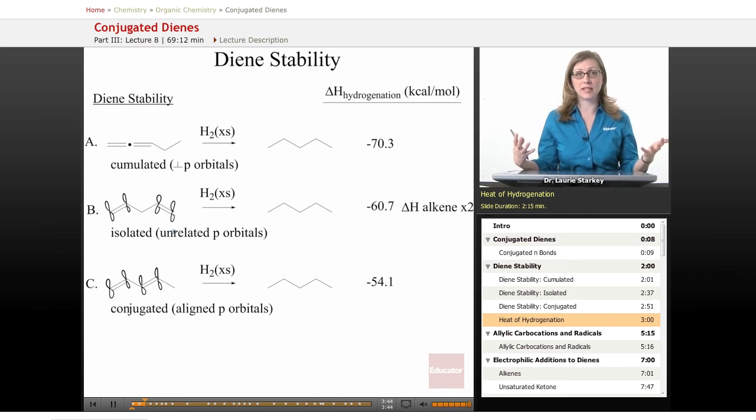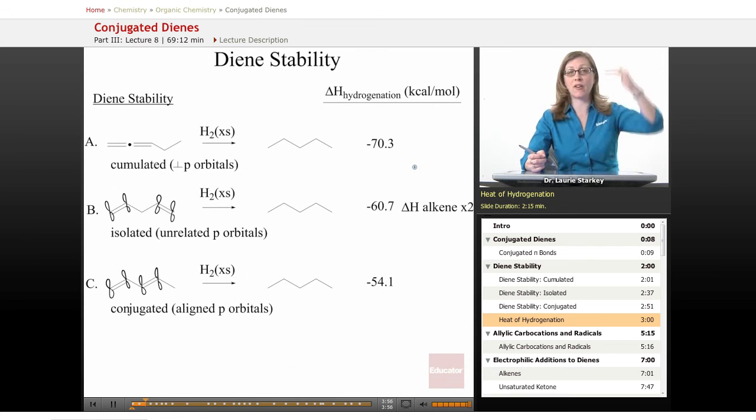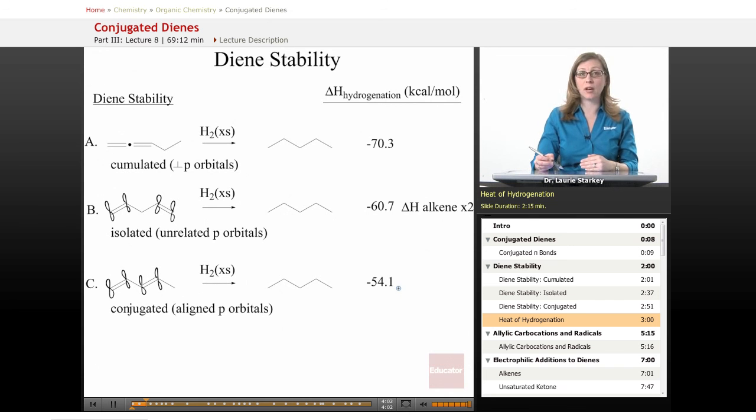However, when you force those two pi bonds to be cumulated to one another, we actually get out more energy from the reduction of this diene, meaning it started out at higher energy. This is an unstable arrangement of double bonds.